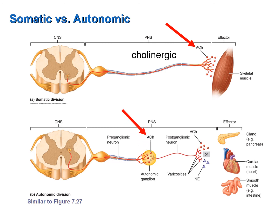The neurotransmitter released by preganglionic nerve fibers is always acetylcholine, so all preganglionic nerve fibers of the autonomic division are cholinergic. Some postganglionic nerve fibers release acetylcholine, while others release noradrenaline, also called norepinephrine. Norepinephrine is very similar to the hormone adrenaline released by the adrenal medulla. Another name for epinephrine is adrenaline; so epinephrine is adrenaline, and norepinephrine is noradrenaline.